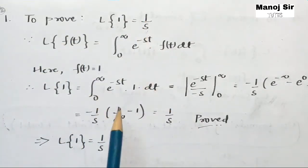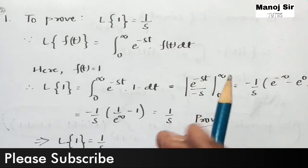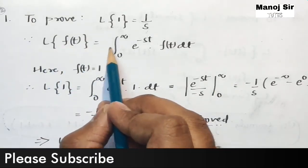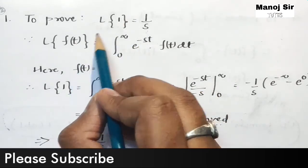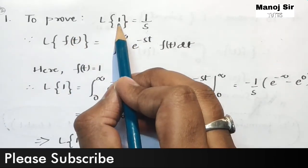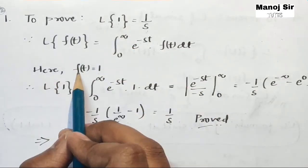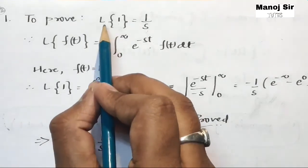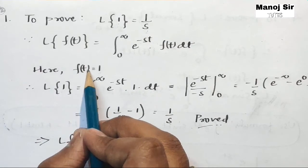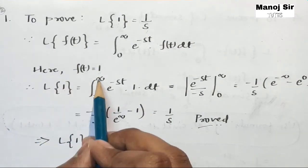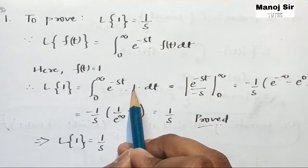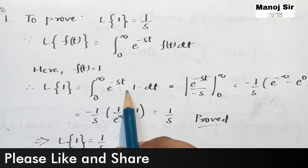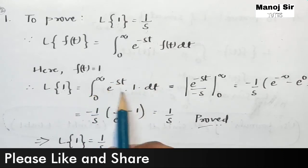Starting with the first formula: Laplace of 1 equals 1 upon s. By the definition of Laplace transform, Laplace of f(t) equals integration from zero to infinity of e to the power minus st into f(t) dt. Comparing, we see that f(t) equals 1. So Laplace of 1 equals integration from zero to infinity of e to the power minus st into 1 dt. Now solving this integration with respect to t.